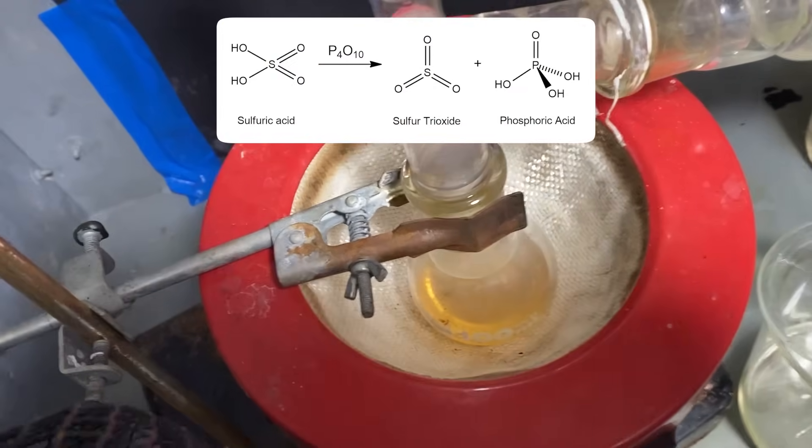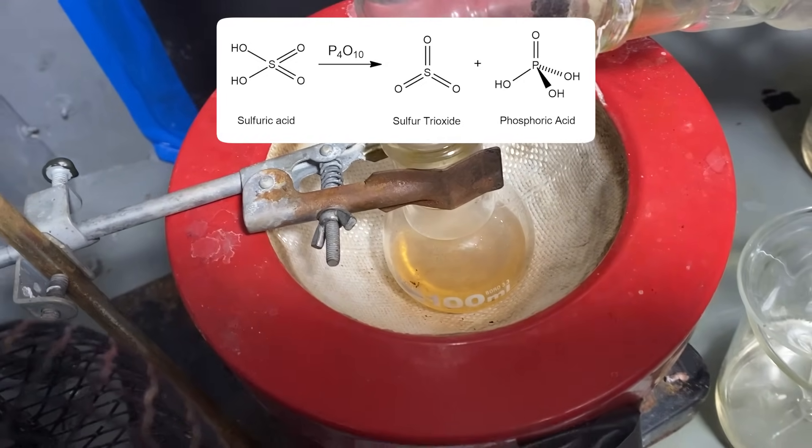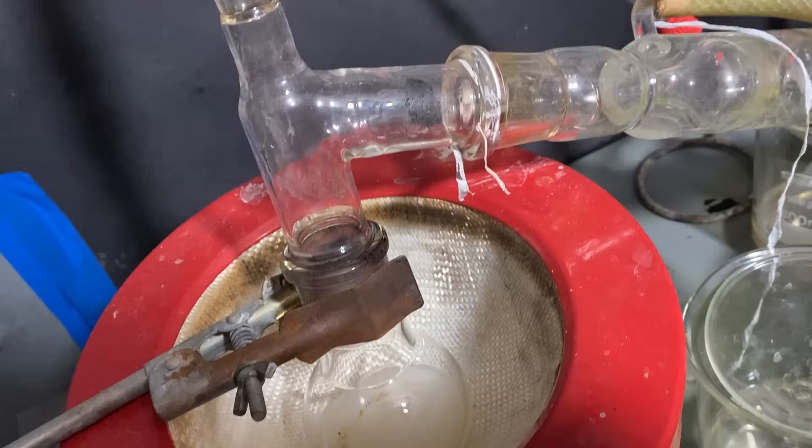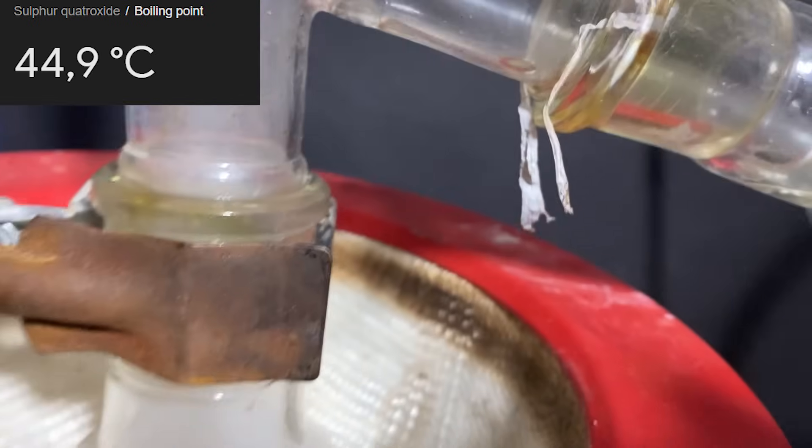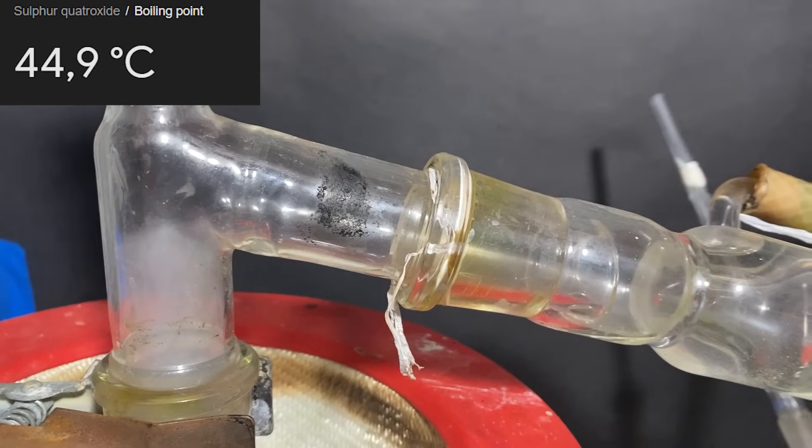Anyway, in this reaction, phosphorus pentoxide dehydrates the sulfuric acid molecule to form the sulfuric acid anhydride, also known as sulfur trioxide. For some stupid reason, you have to heat up the solution or sulfur trioxide won't form. And since sulfur trioxide boils slightly higher than room temperature, then it almost immediately vaporizes and makes its way into the condenser.